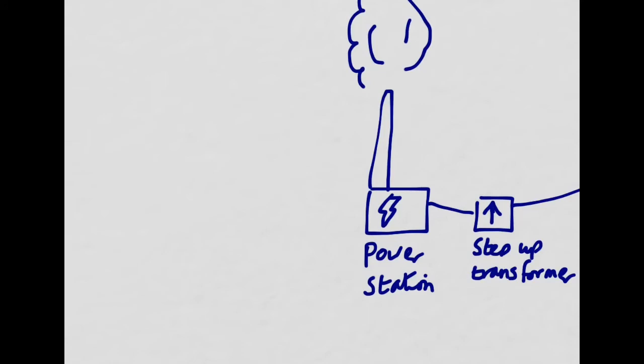Chances are, at half-time in the FA Cup Final, a lot of people are going to get up and have a cup of tea. We need to predict that so that we can produce the power needed to power those kettles so that we can have a cup of tea at half-time. Likewise, we might turn down the power stations at night-time when fewer people are using electricity because everyone's asleep and the lights are off and the TV's off.